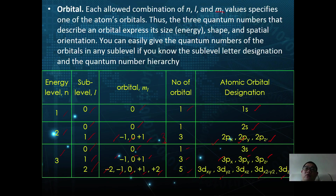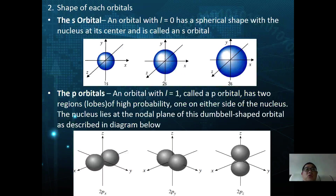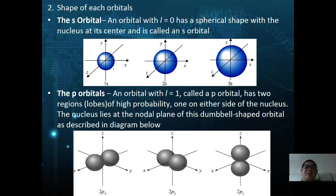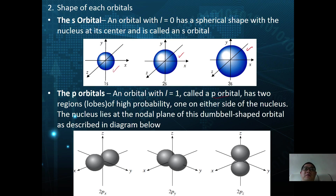We will use these atomic orbital designations in electronic configuration later. For the shape of orbitals: the s orbital, which has angular momentum l equals 0, has a spherical shape with the nucleus at its center. 1s is small, 2s is greater, and 3s is even greater — the number of s orbitals is proportional to the number of energy levels.